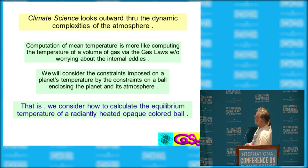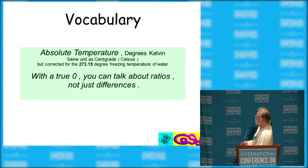Climate science looks outward through the complexities of the atmosphere, and that's what an awful lot of this conference covers. But computation of mean temperature is really more like calculating the volume of gas laws. And we'll consider just how to calculate the temperature of a radiantly heated opaque ball.